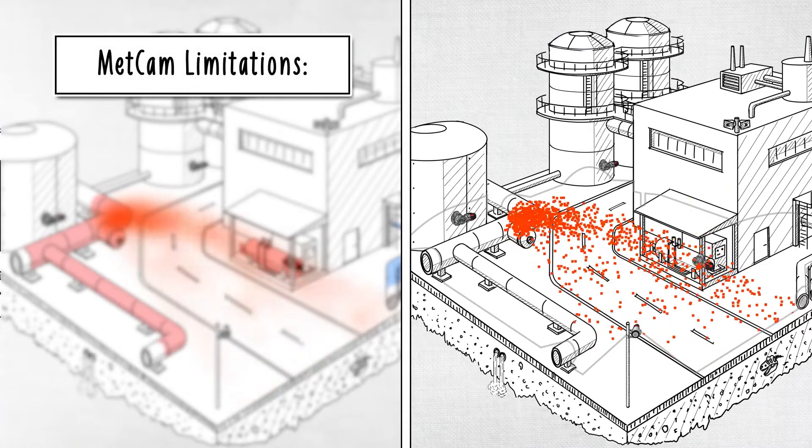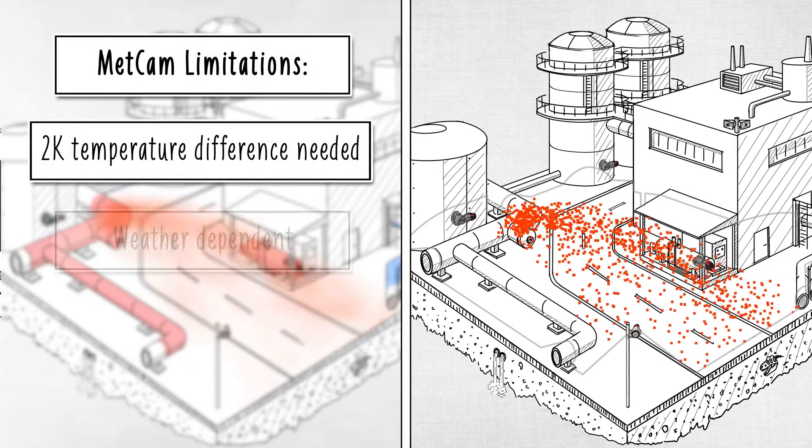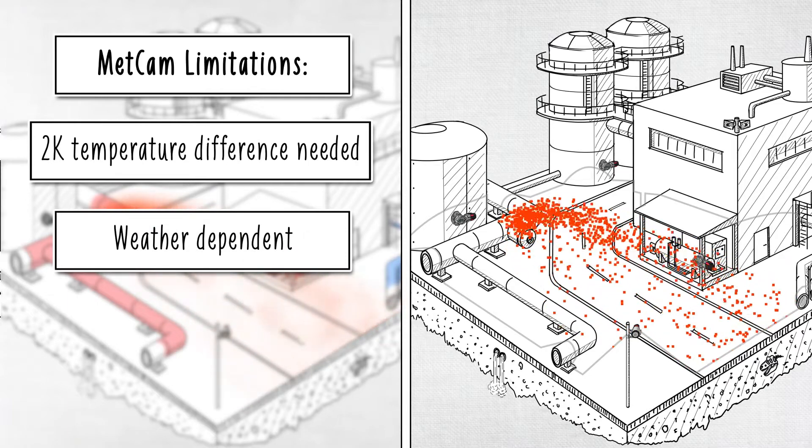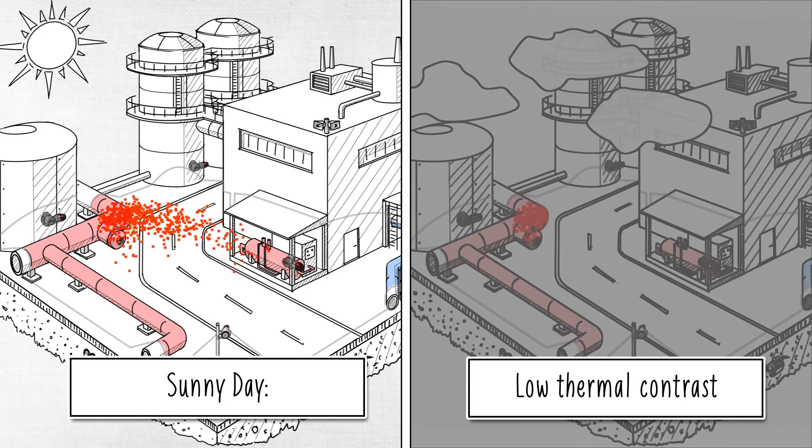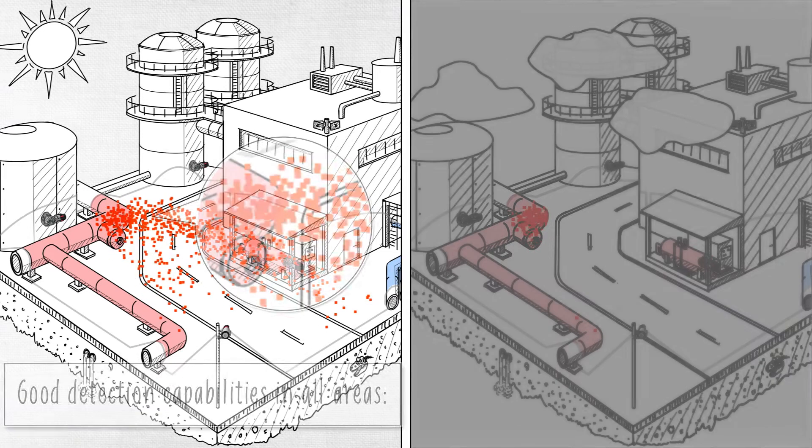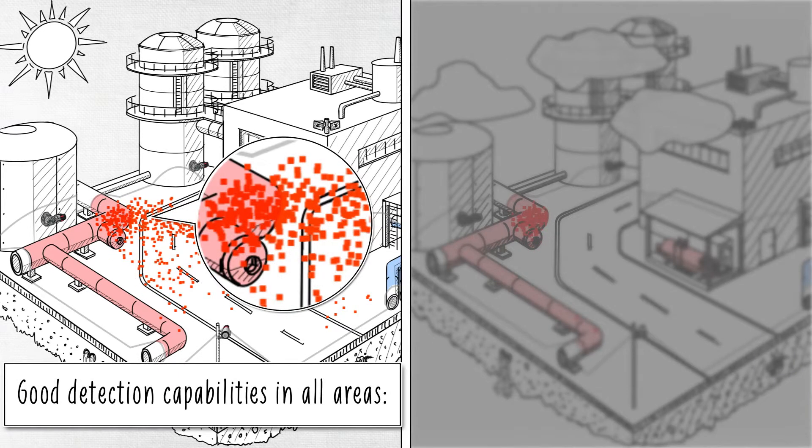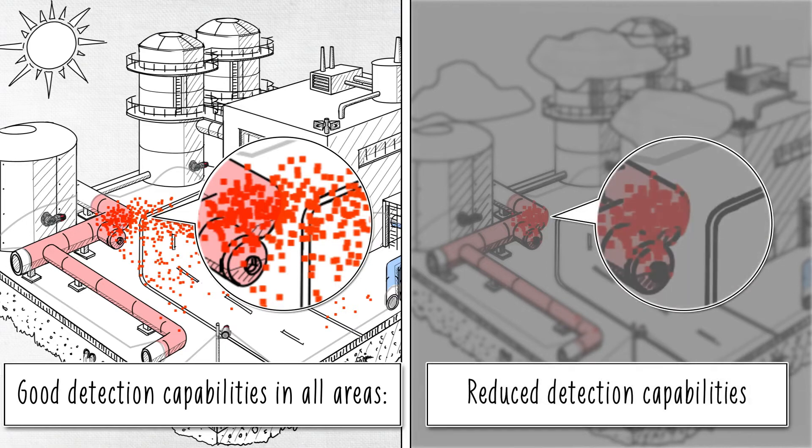METCAM uses thermal imaging and therefore depends on environmental conditions for its operation. Built-in algorithms monitor the environment and report inhibition when conditions do not allow gas detection. Correct installation will minimize METCAM downtime.